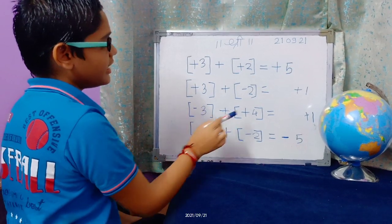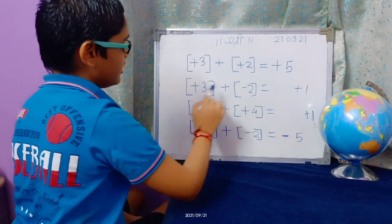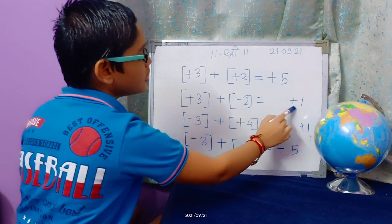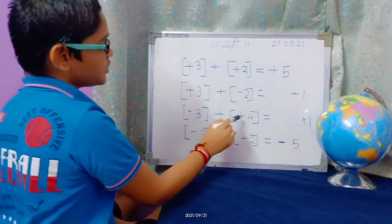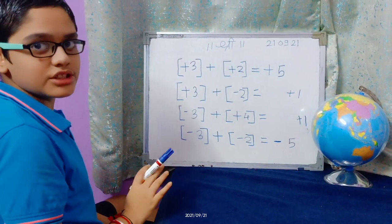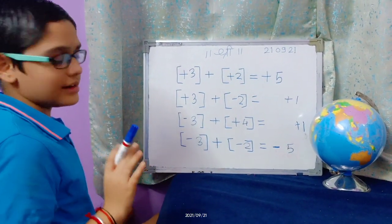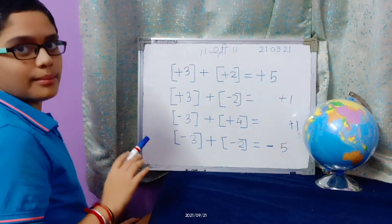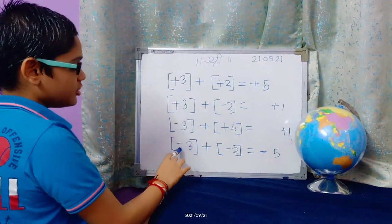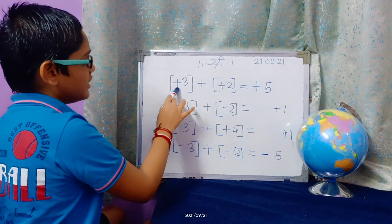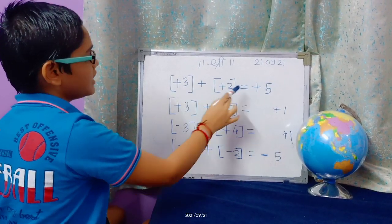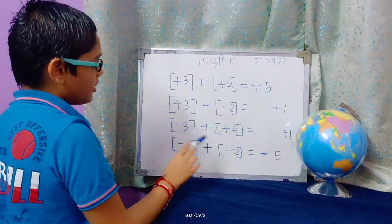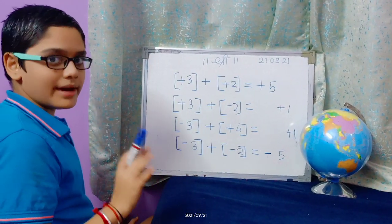So here greater number is 3, so plus sign. The greater number 3 has plus sign, so the answer has plus sign. Then minus plus plus again depends on greater number. And minus plus minus equals minus because here common sign is minus. Like same common sign plus, so answer is also plus. And then minus common sign, so here also minus.